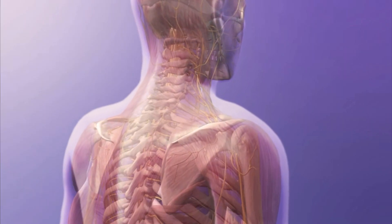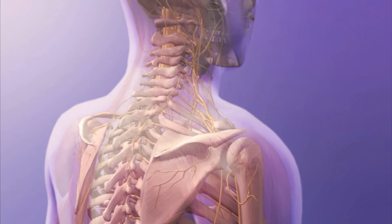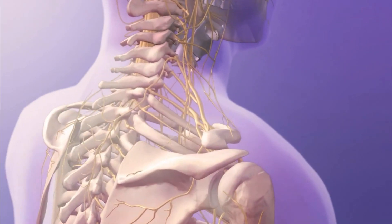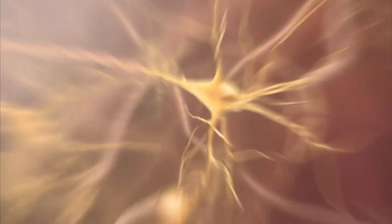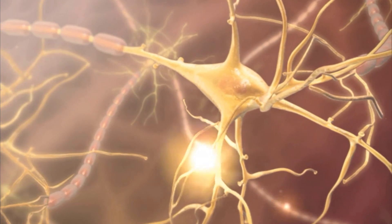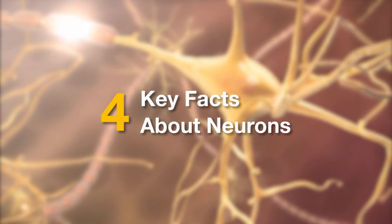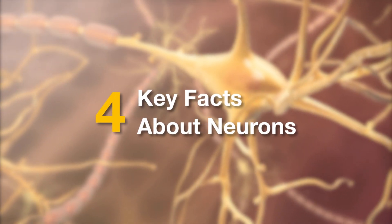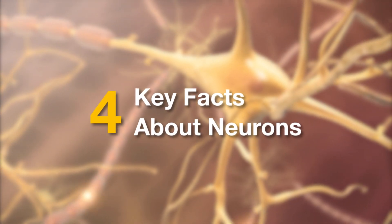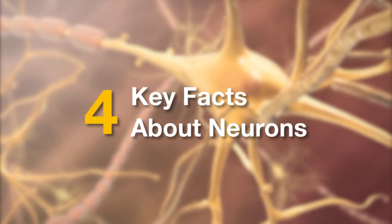Neurons allow the brain and body to communicate by relaying sensory information and motor commands as electrical signals. There are four steps to this process. Let's go through each one.